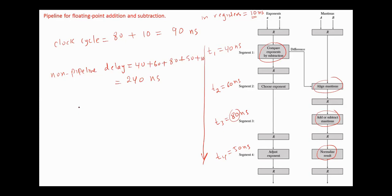In this case, the speedup ratio is 240 over 90, which is 2.67.